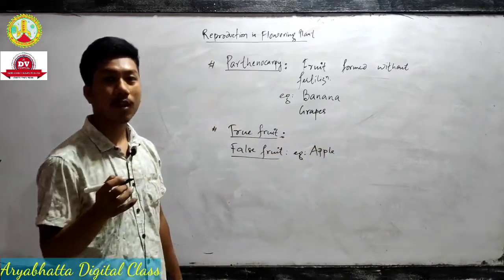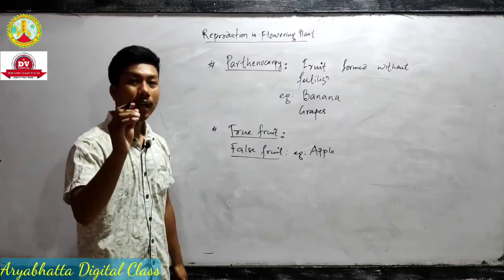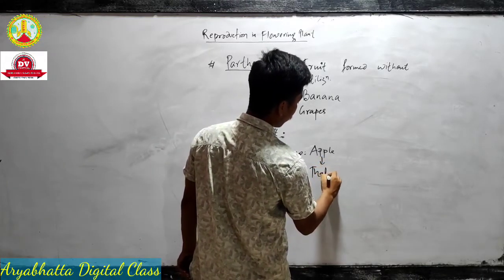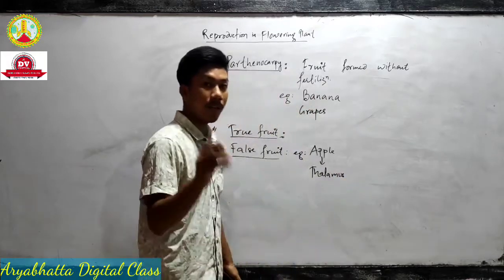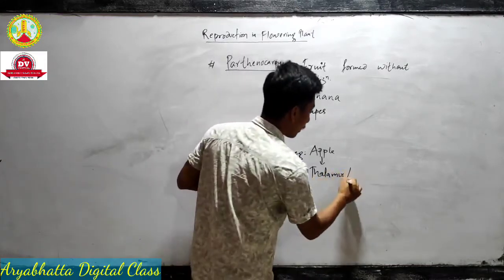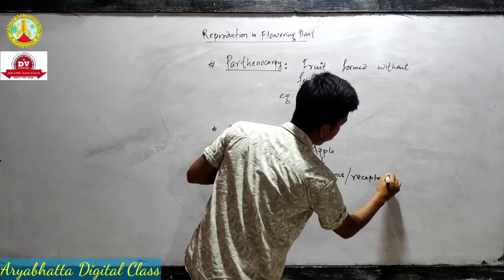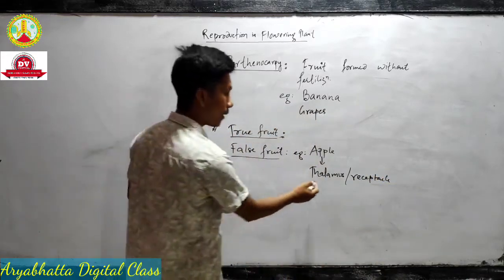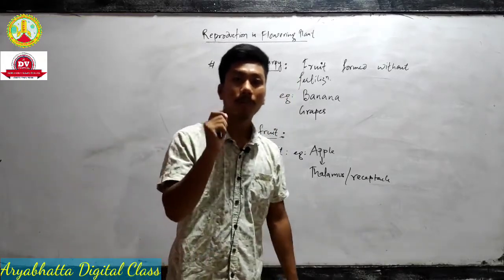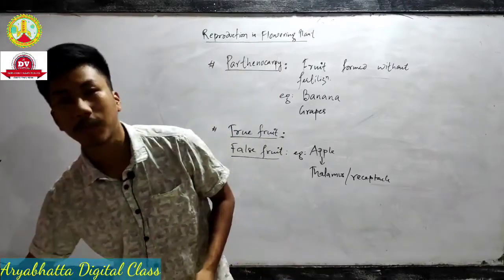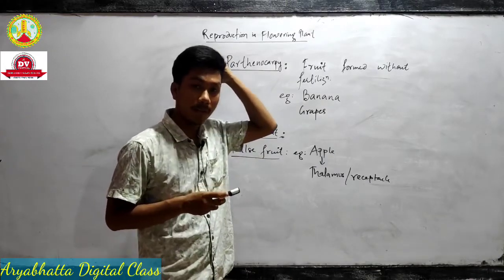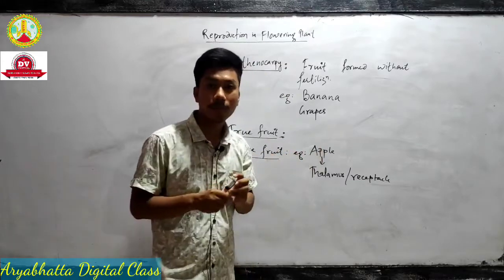A very common example always asked for one mark is apple. Apple does not develop from the ovary — it develops from the thalamus, which is the part of the plant body that holds all the reproductive parts. The thalamus is also known as the receptacle. So apple is a false fruit because it develops from the thalamus, not from the mature ovary. With this we have completed this chapter.